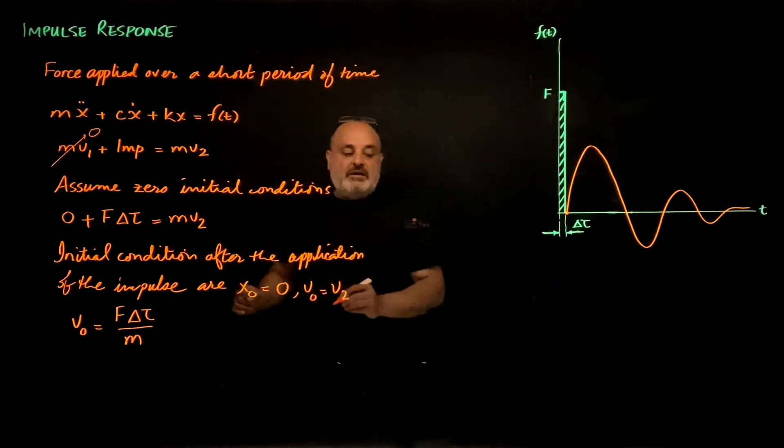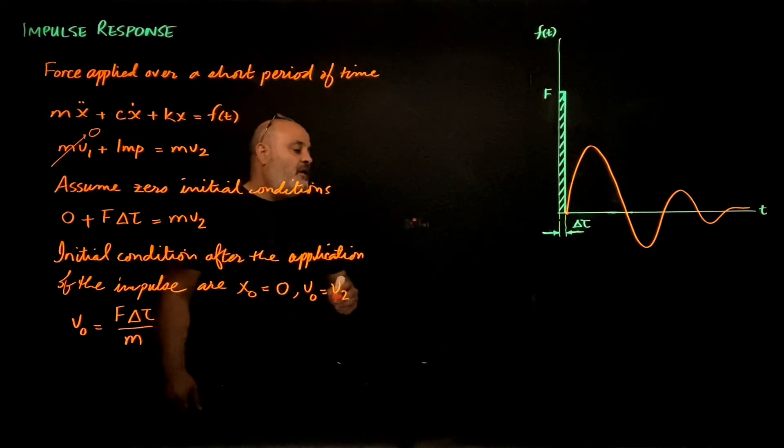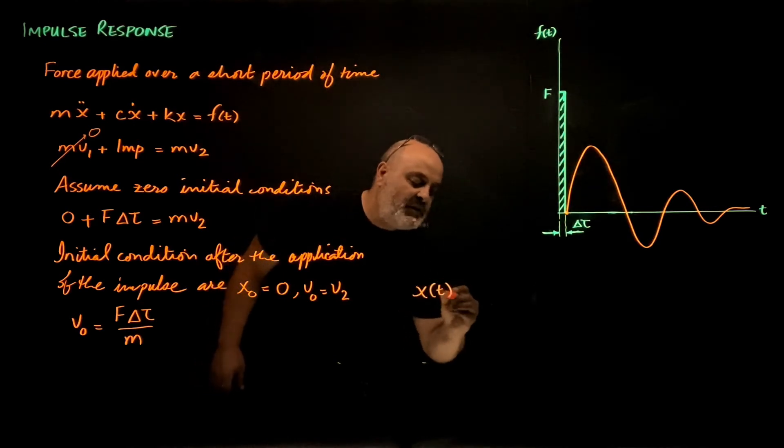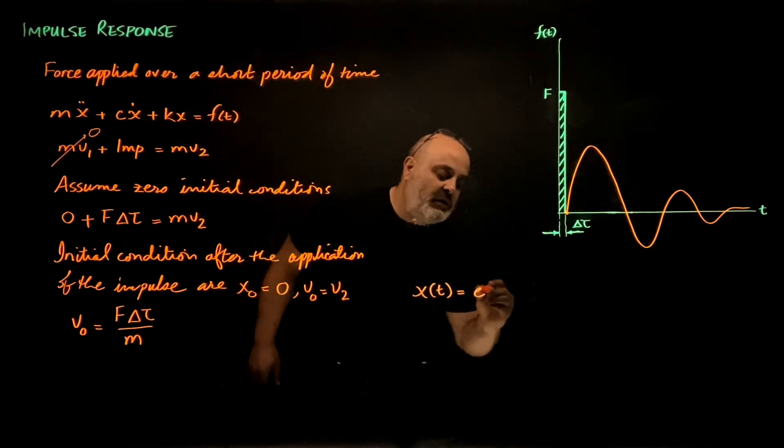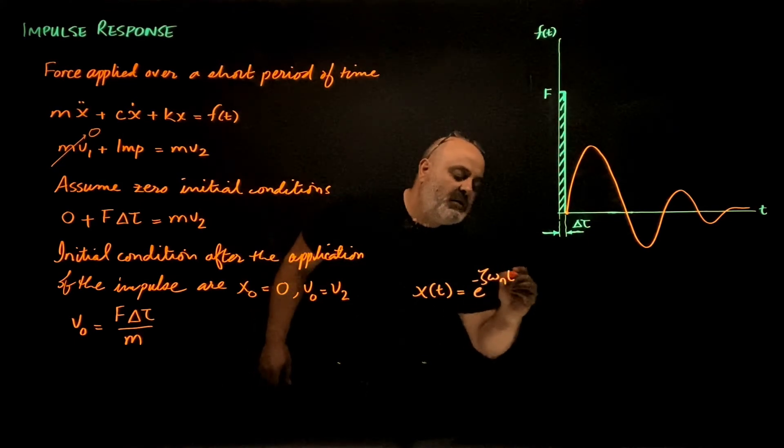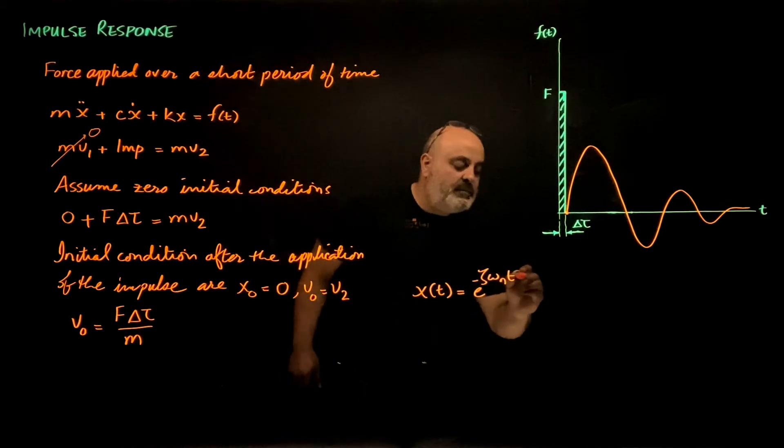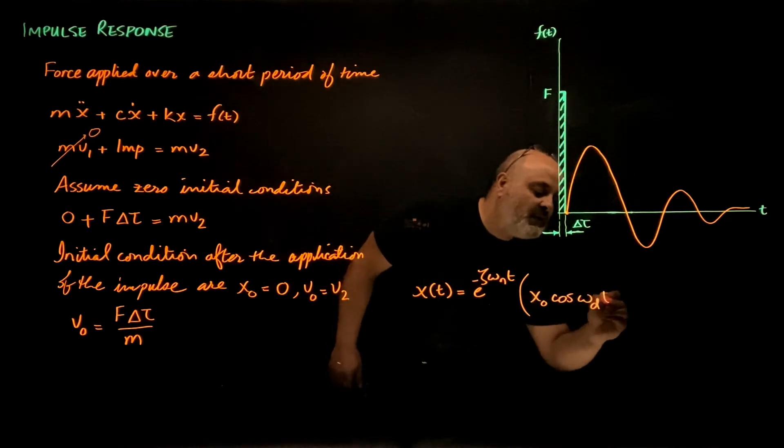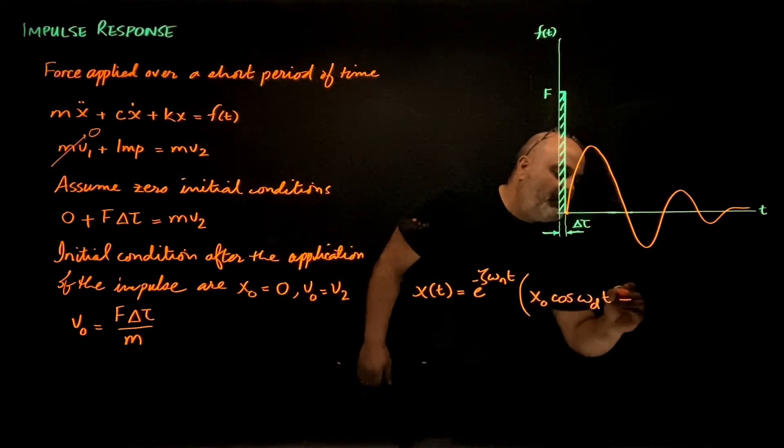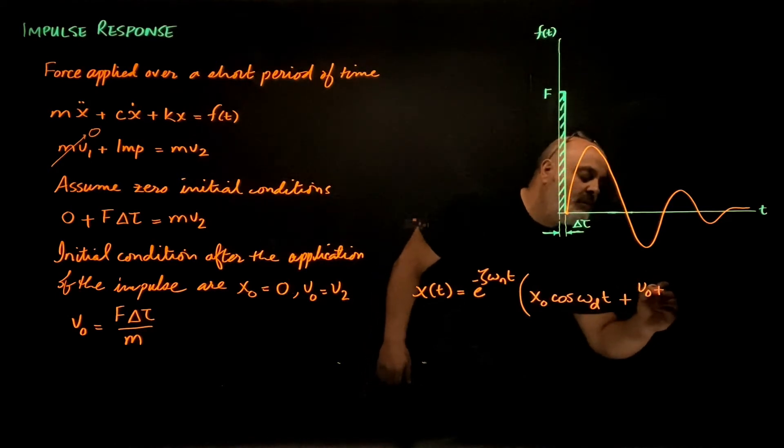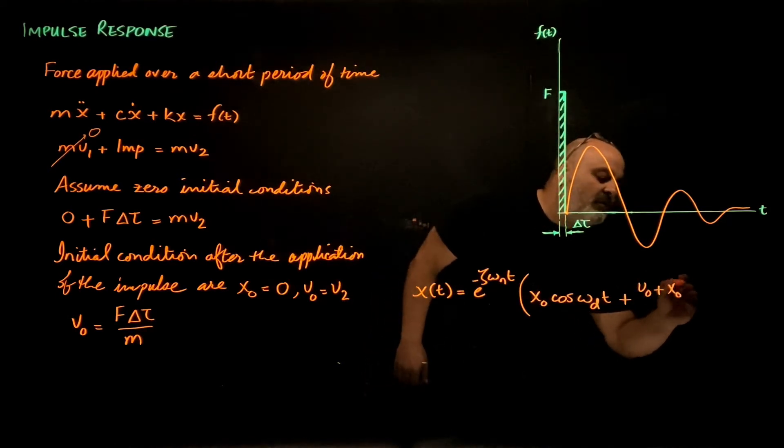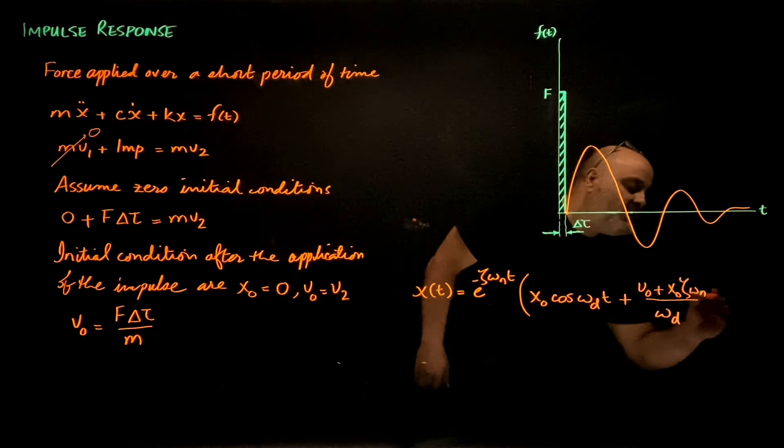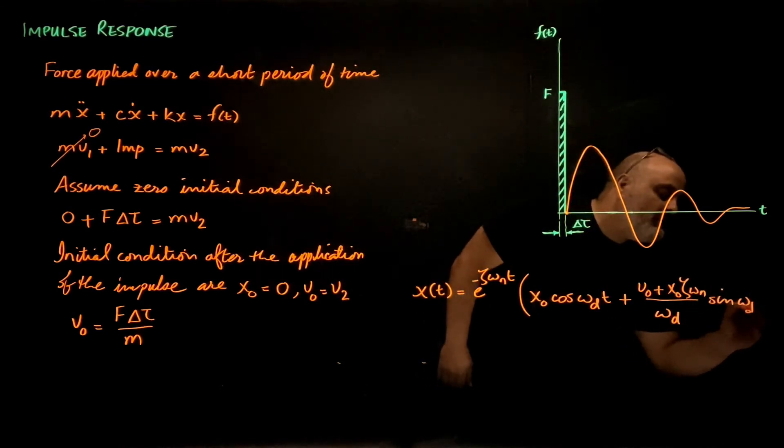Now after the impulse I have free vibration, and I know that the free vibration of a single degree freedom system, the response is x of t equals e to the power negative zeta omega n t times x0 cosine omega d t plus v0 plus x0 zeta omega n divided by omega d sine omega d t.